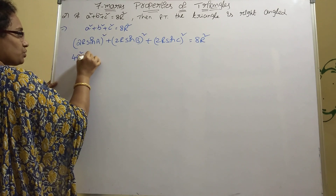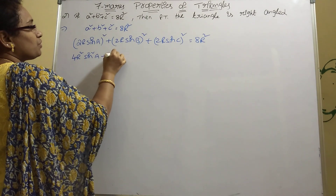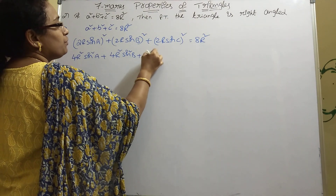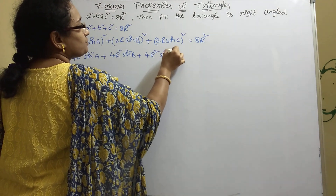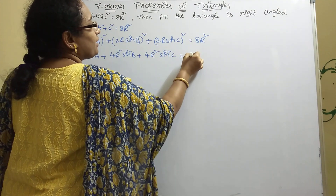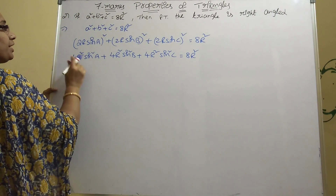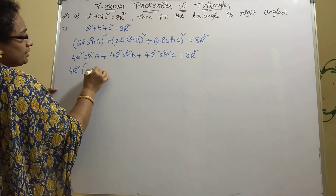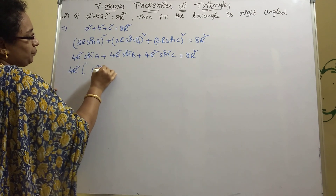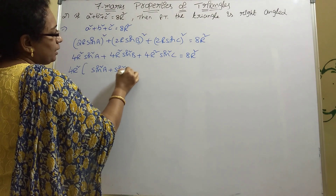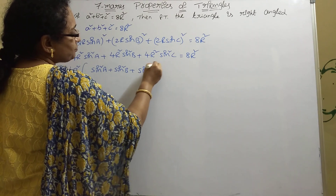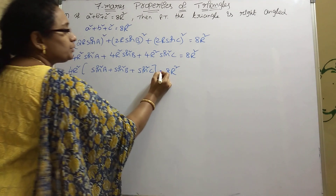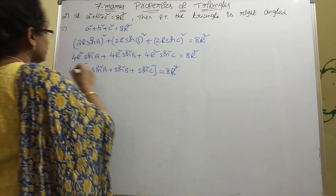Expanding gives: 4R² sin²A + 4R² sin²B + 4R² sin²C = 8R². There are three terms, each with 4R². Factor out 4R²: 4R²(sin²A + sin²B + sin²C) = 8R².